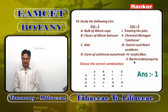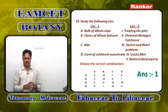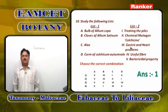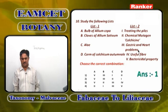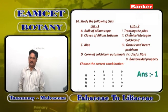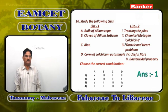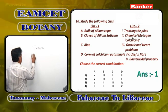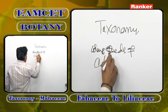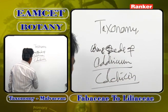Bulb of Allium cepa has bactericidal properties. Cloves of Allium sativum (garlic) are used to control gastric and heart problems. Aloe is used to treat piles. Colchicum autumnale — the corm and seeds give a special chemical mutagen called colchicine.